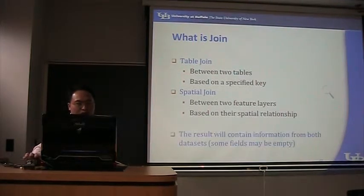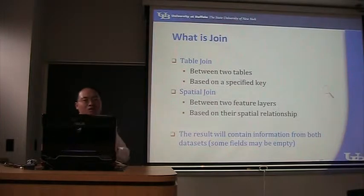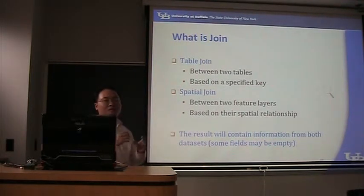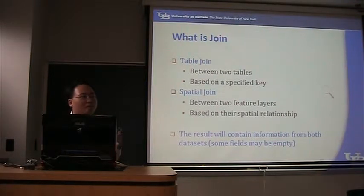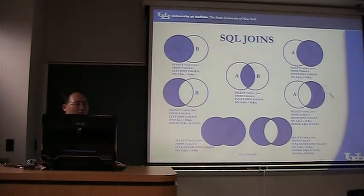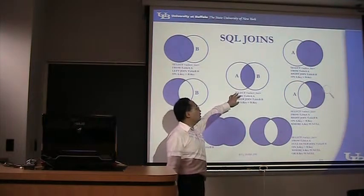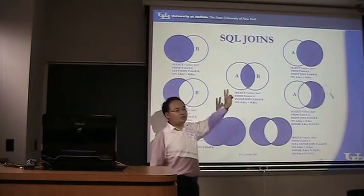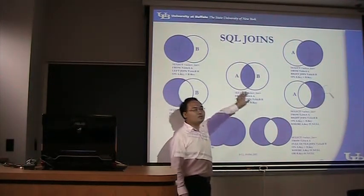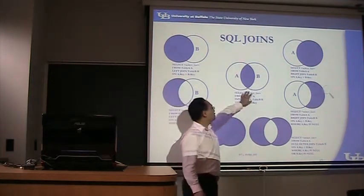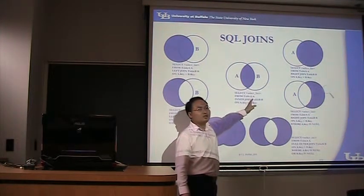I want to emphasize - the result of the join will contain information from both datasets. For each record, the result will contain information from both datasets. If some field is not existed, it will be empty or null. Here are types of joins. The most frequent one we are using is called inner join. Here are two datasets. If a record exists in both two datasets by its key, the result is called inner join.